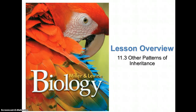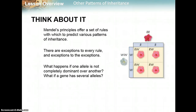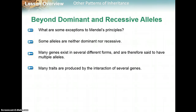We're going to learn about other patterns of inheritance that don't necessarily follow Mendel's simple results that we see in normal Punnett squares like dominant and straight recessive. Mendel's principles offer a set of rules with which to predict various patterns of inheritance. There are exceptions, though, to every rule and exceptions to the exceptions. So what happens if one allele is not completely dominant over another? What if a gene has several alleles? So beyond dominant recessive, what are some exceptions?